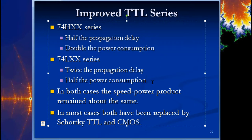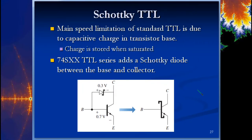Both the H and L series have largely been replaced by Schottky TTLs and CMOS. The main speed limitation of standard TTL is capacitive charge stored in the transistor base when the transistor is saturated. The Schottky series adds a Schottky diode between the base and the collector. This prevents the charge from storing, which is what causes a slow high-to-low transition — you have to let that stored charge find ground before it transitions. The Schottky diode prevents saturation and speeds up switching.